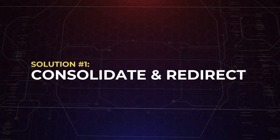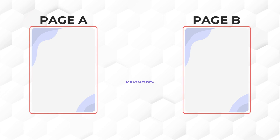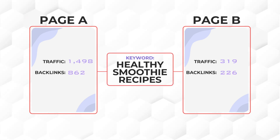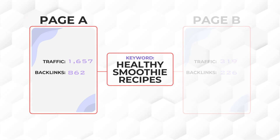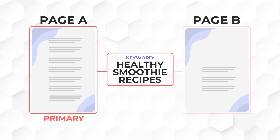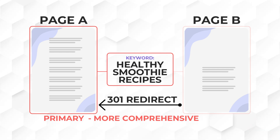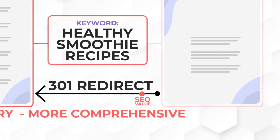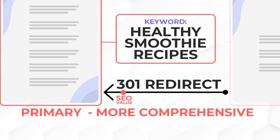There are multiple ways to fix keyword cannibalization. The first solution requires you to combine all competing pages into one comprehensive page. Imagine you have page A and B both targeting 'healthy smoothie recipes.' Analyze the SEO factors of both pages and choose the one with the most quality backlinks, rankings, and traffic as the primary page — let's say page A. Combine the valuable contents from page B into page A to make it more comprehensive, and finally add a 301 redirect from page B to page A to transfer all SEO value previously accumulated from page B.